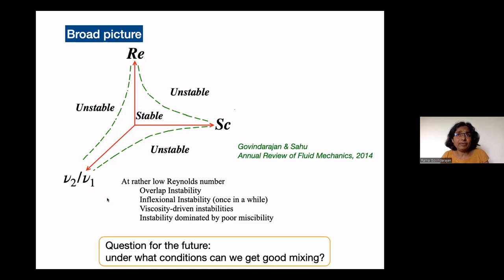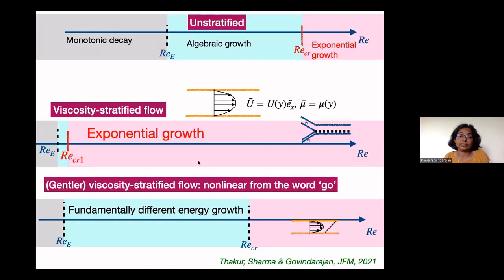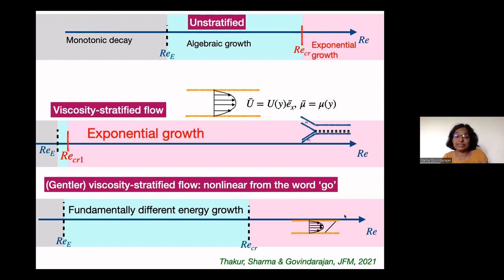A question I haven't yet worked on but will leave for the group: if we want good mixing inside a micro channel, what should the viscosity ratio be, and what are the relative amounts of fluid 1 and 2? What can we do to optimize mixing? Today we focus on the middle scenario — more sudden changes in viscosity — as opposed to a gentler viscosity variation.